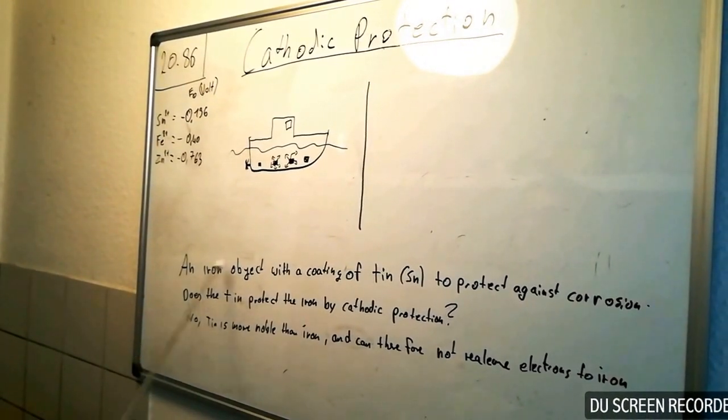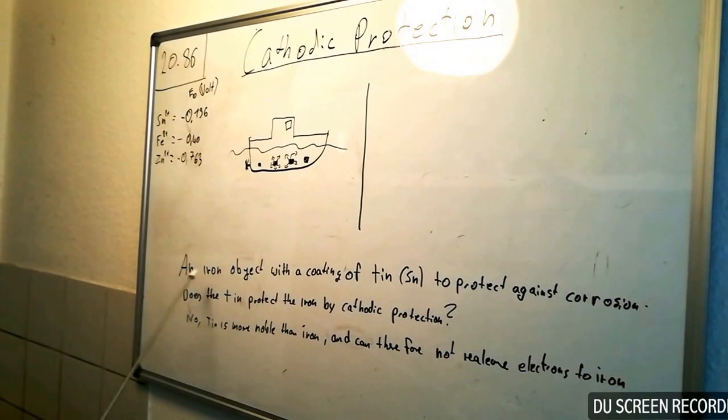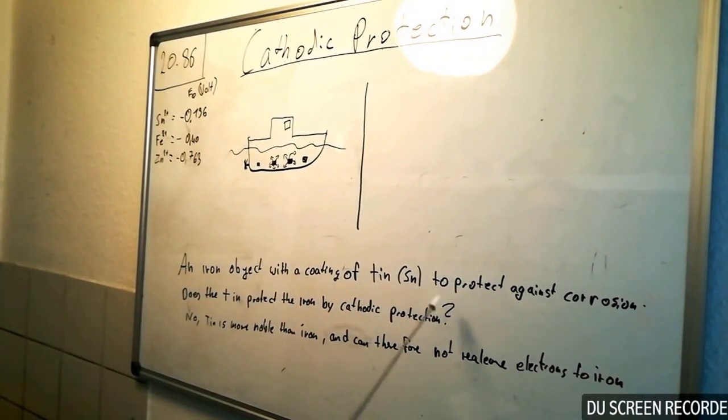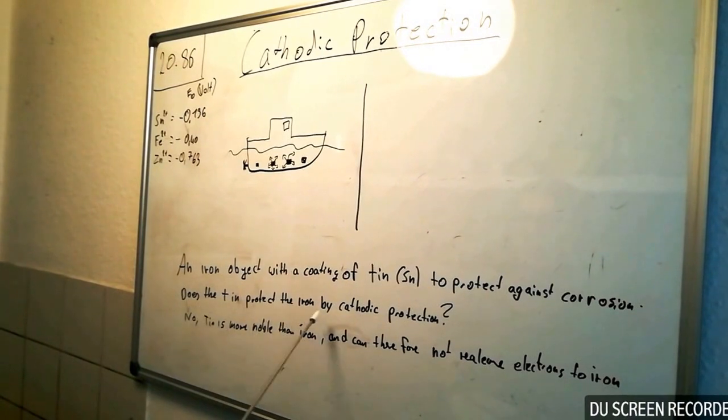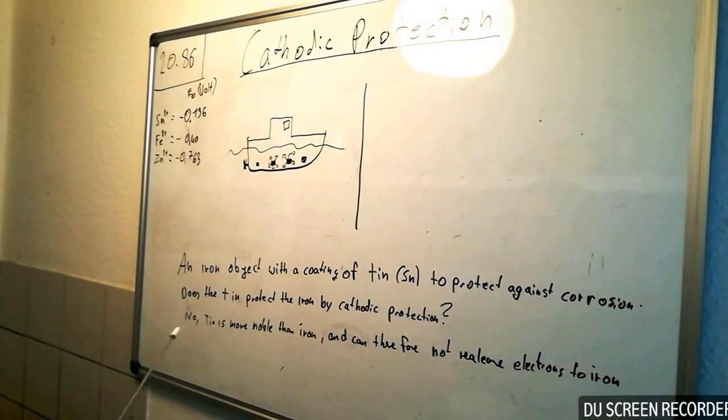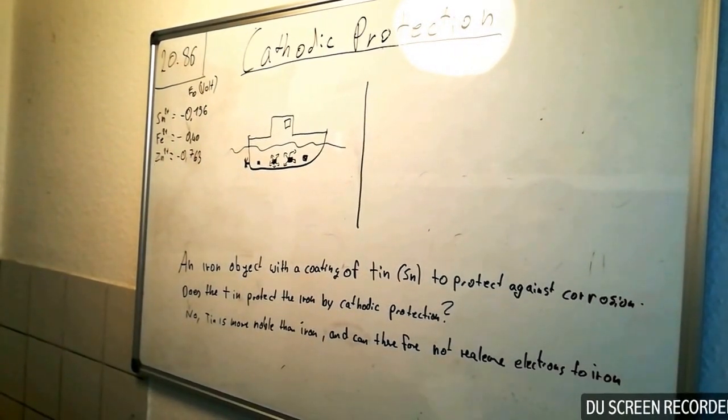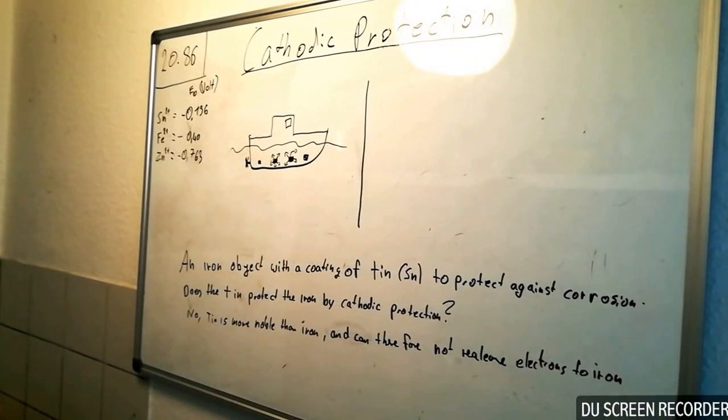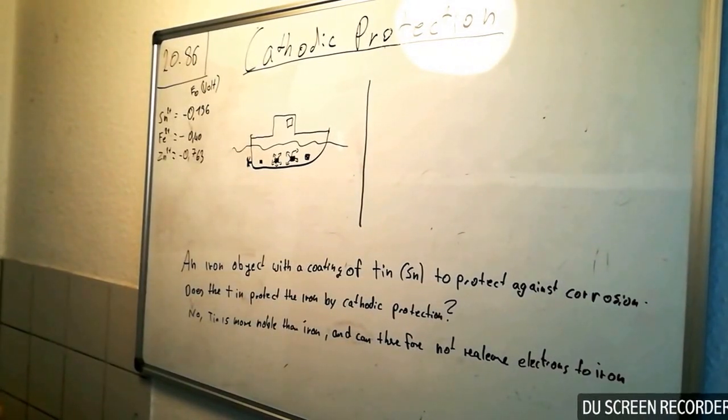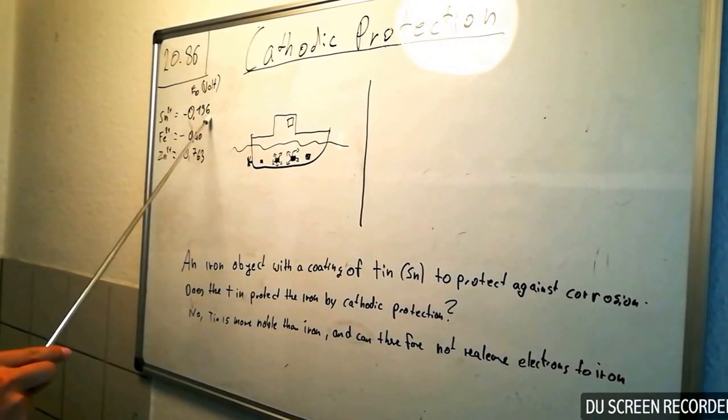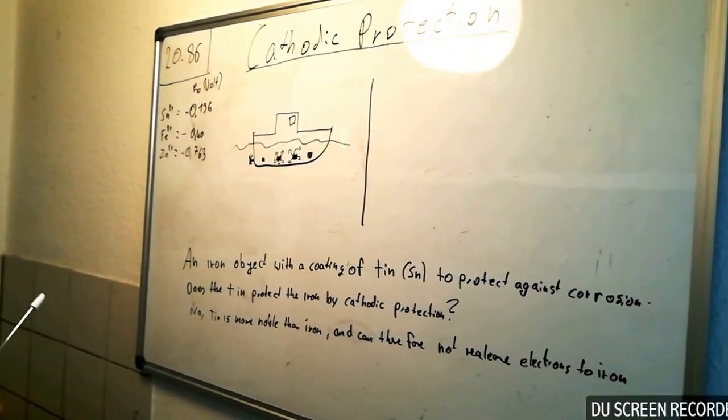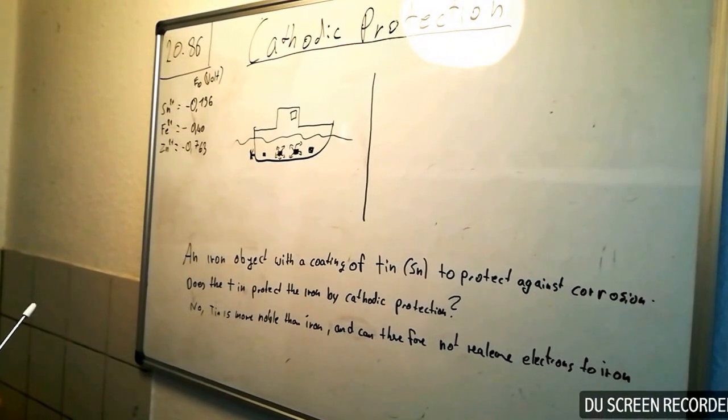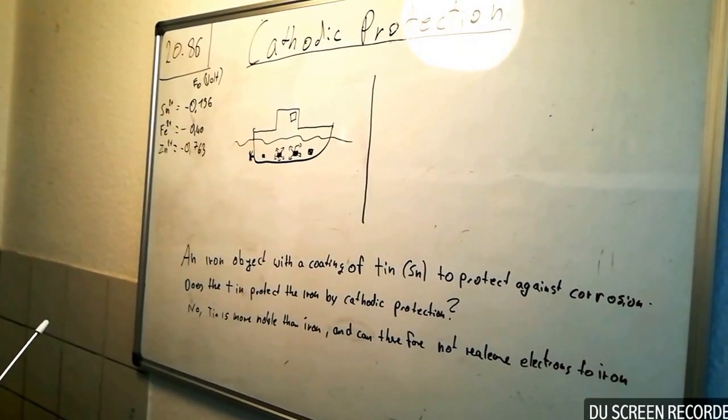And now we come to the question from the beginning. An iron object with a coating of tin to protect against the corrosion - does the tin protect the iron by cathodic protection? The answer is no, because tin has a higher standard potential than iron - you can see it here - and therefore more noble than iron, and got no voluntary to release electrons to the iron.